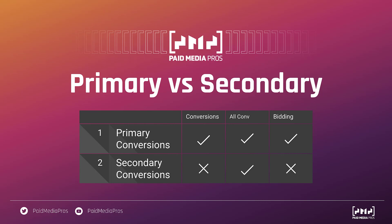As a quick recap: only primary conversions are going to be counted in the conversions column. Secondary conversions will not be included in that column. But both actions, regardless of priority setting, will show up in the all conversions column. When it comes to bidding or using any of Google's Smart Bidding strategies, primary actions will be included in those real-time calculations to determine who to show your ad to and what bid to put in place. Secondary actions will not be used for those bidding decisions, and their only presence in the platform is in the all conversions column.